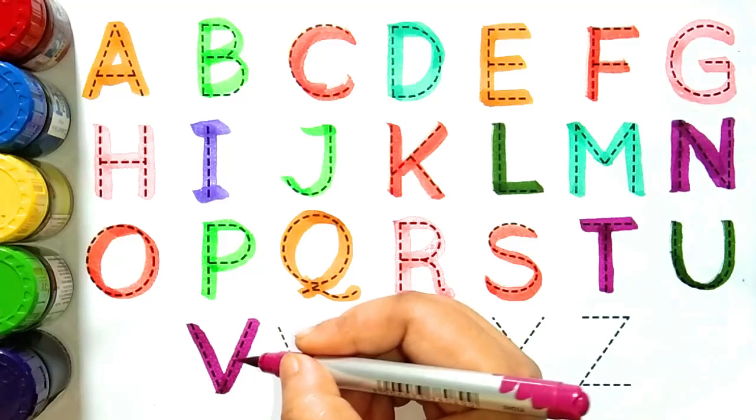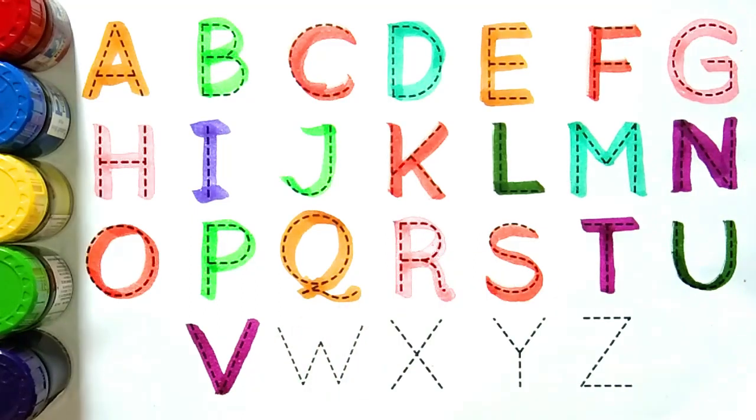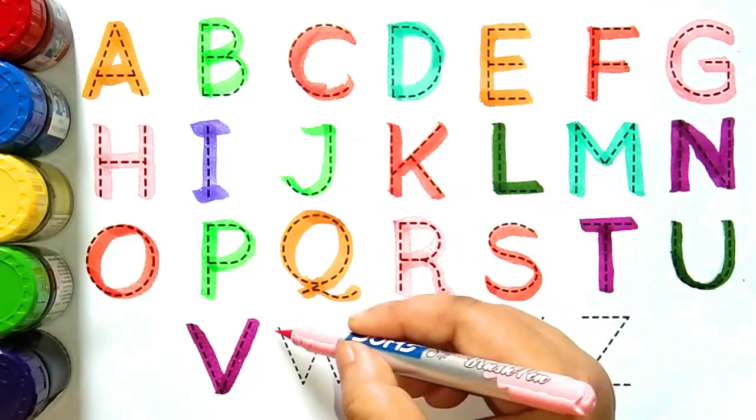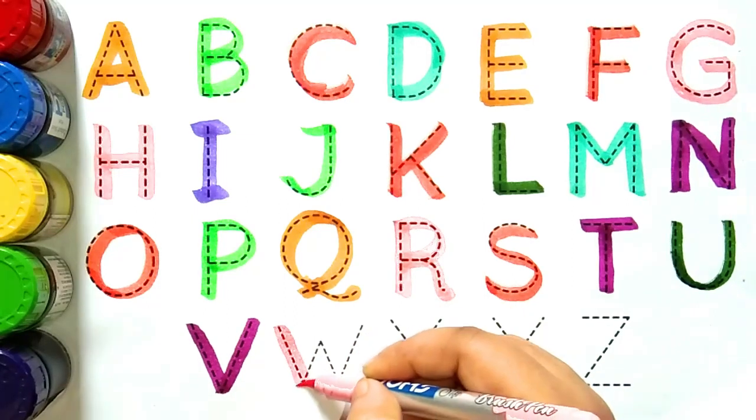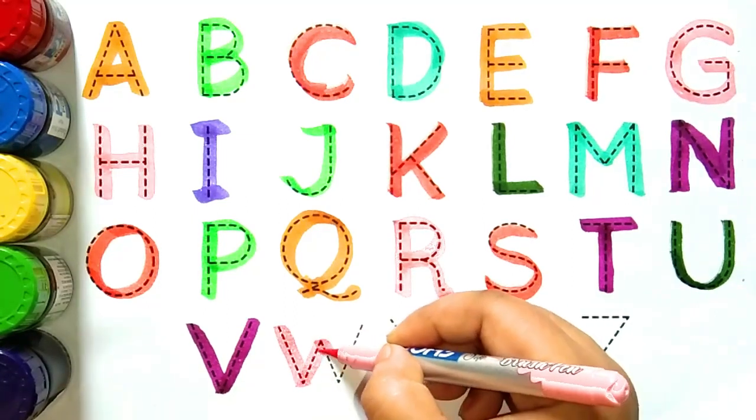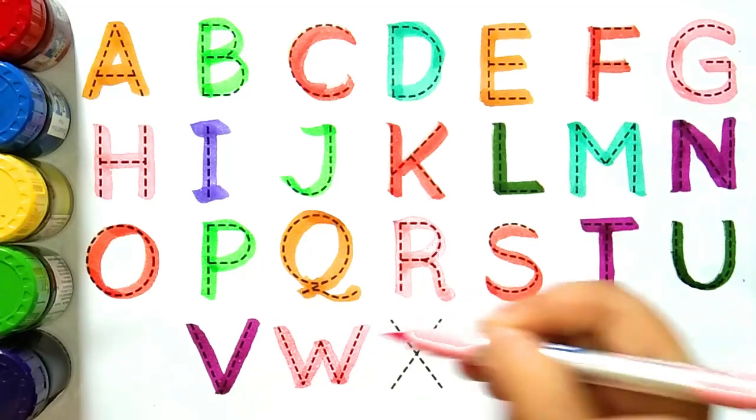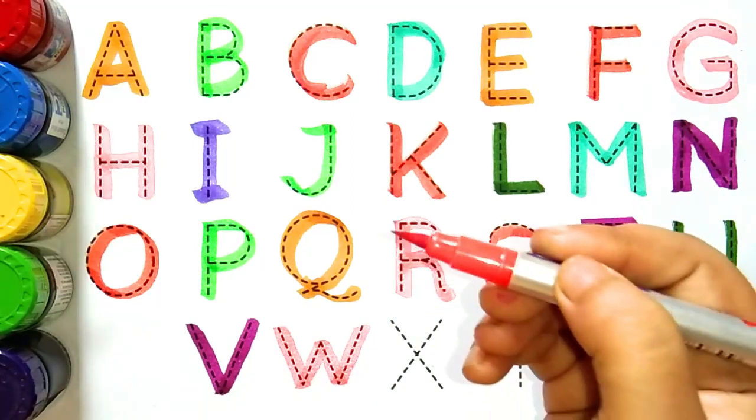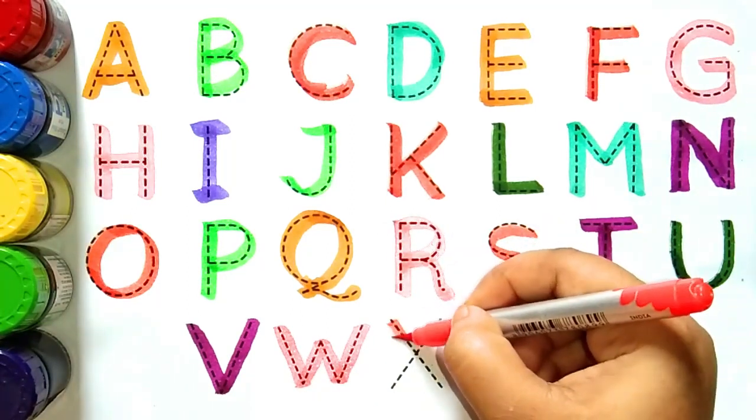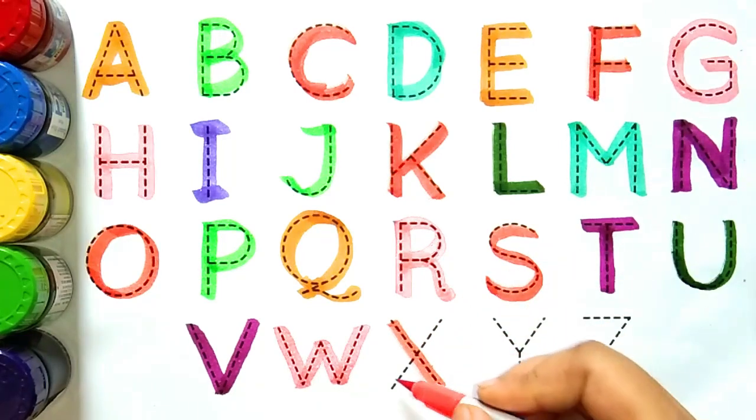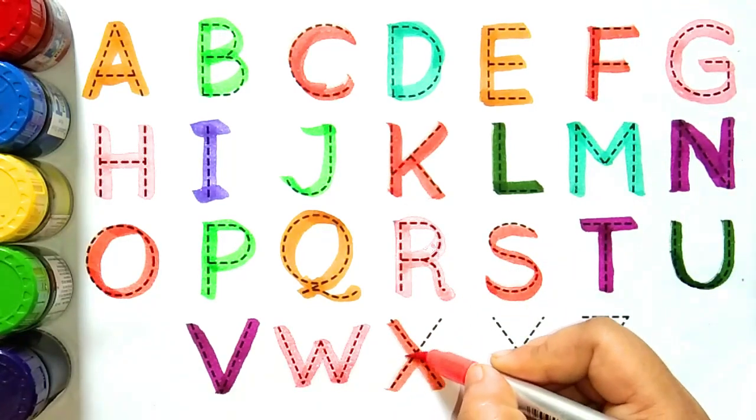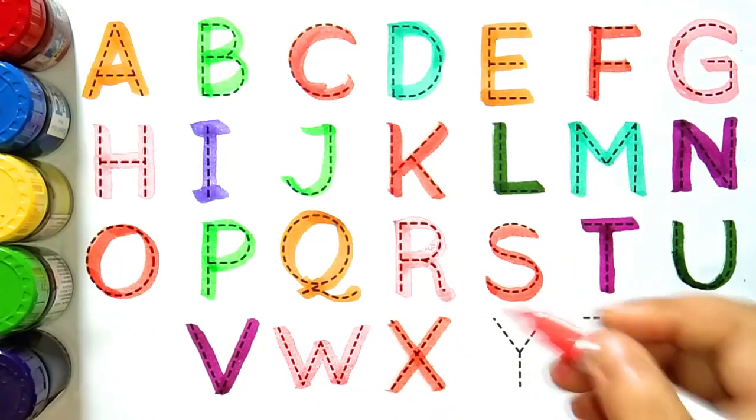U, U for university. U for kya hota hay bacho, U for hota hay university. Magenta color. V, V for vegetable. V for kya hota hay bacho, V for hota hay bacho. Light pink color. W, W for watch. W for kya hota hay bacho, W for hota hay watch.